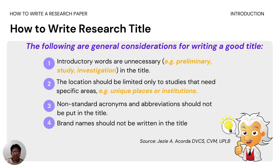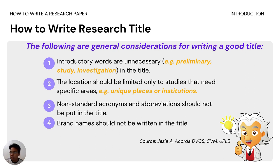Next, non-standard acronyms and abbreviations should not be put in the title. There are abbreviations that are universally accepted, like JHS for junior high school, SHS for senior high school, and BAB for basic education department. Non-standard abbreviations should be avoided. Also, brand names should not be written in the title — for example, do not put AstraZeneca, Moderna, or Alaska as brand names when studying medicines or products.